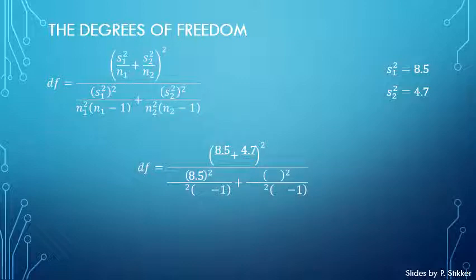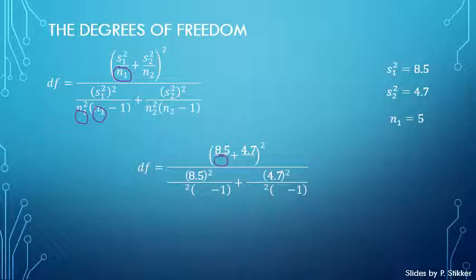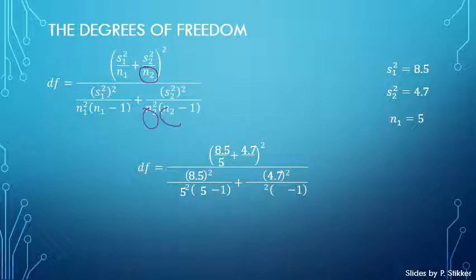We also need N1, the number of scores in the first category, which appears in several places in the formula and was 5 in our example. Filling that in, and likewise N2 which was 6, filling that into its positions as well.